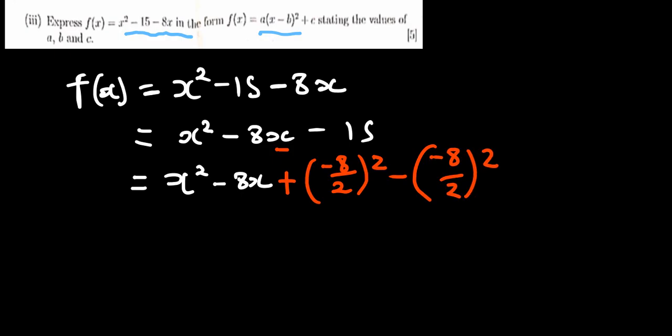So minus 8 divided by 2, then squared. And then at the end there, we see that we have a minus 15. So this is how you complete the square always. You just get the coefficient of this x, you divide it by 2 and then you square it and then you add it and then you subtract this. So what I've done here is what we call adding a special zero.